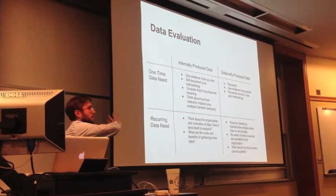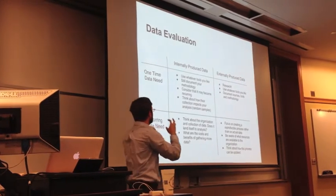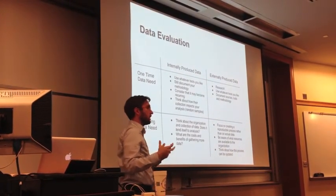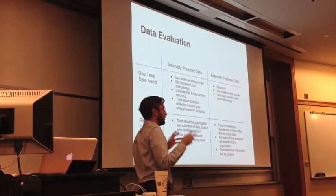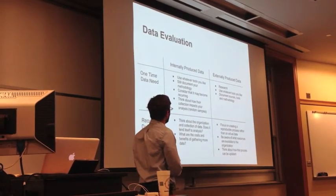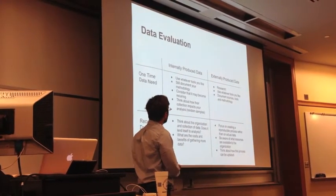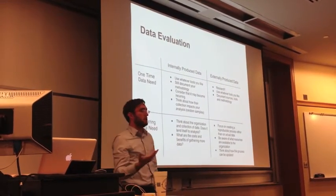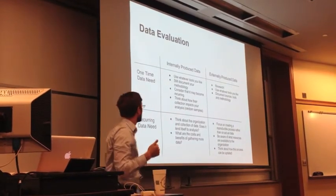So if we take these two schemes and cross-hash them, we get four different categories of data that are helpful to think through when addressing a data needs assessment, because you can see whether the data they have falls into one of these categories, and where the data they need falls into these categories.